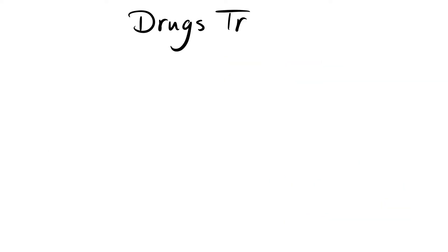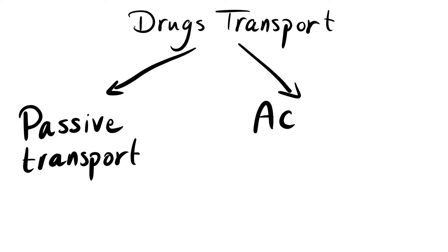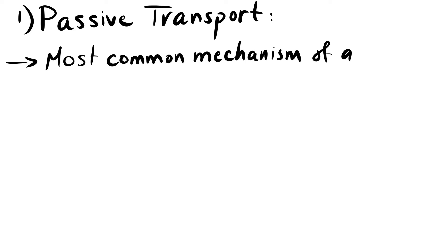Thus, the passage of molecules and substances across a biological membrane may occur either passively or actively. Let's start now with passive transport. This type of transport is the most common mechanism of absorption for drugs.